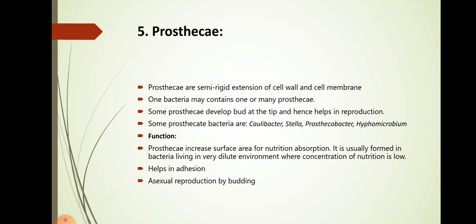The next structure is prosteca. These are semi-rigid extensions of cell wall and cell membrane. One bacteria may contain one or more prosteca. Some prosteca develop buds at the tip and hence help in reproduction. Some prosteca producing bacteria are Caulobacter, Stella, Prosthecomicrobium, Hyphomicrobium, etc. The function is to increase surface area for nutrition absorption. It is usually formed in bacteria living in very dilute environment where concentration of nutrition is low. It helps in adhesion and asexual reproduction by budding.